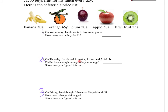On Thursday, Jacob had one quarter, one dime, and two nickels. Did he have enough money to buy an orange? In this area, you're going to add up the total for a quarter, a dime, and two nickels, show what your total is, and then compare that to the price of an orange. Show your work there.